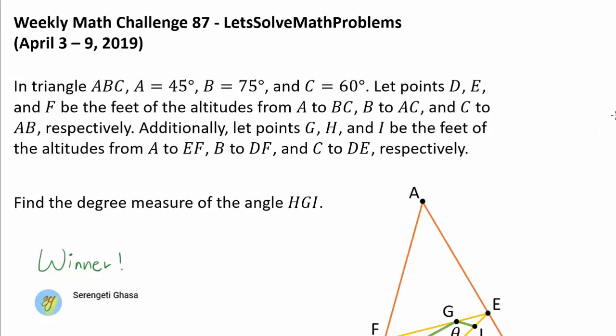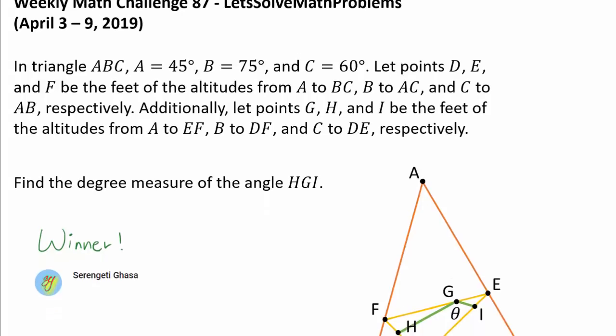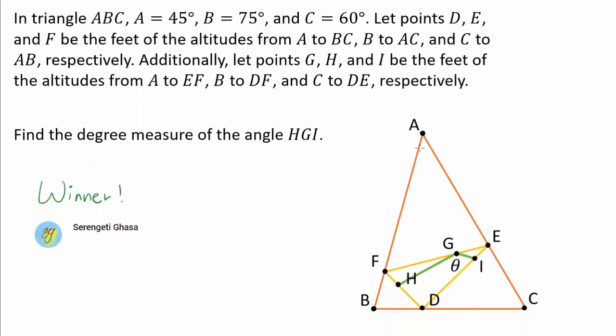We go over the solution to the 87th weekly math challenge. In triangle ABC, we have A being 45 degrees, B being 75, and C being 60 degrees. These are pretty nice angles that we are given to start off.